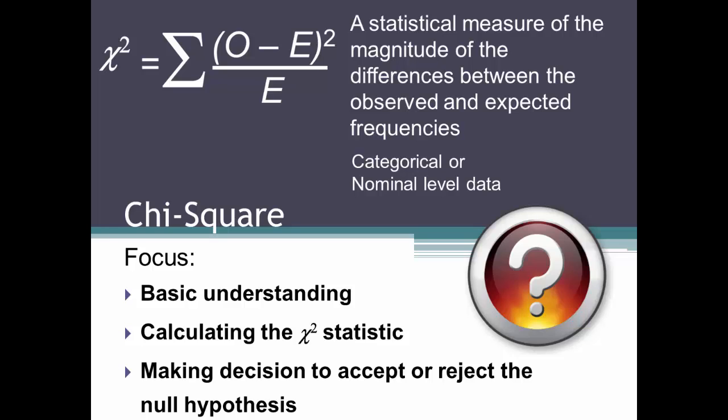We will calculate a one-variable chi-square here. Once you understand the basics, the two-variable chi-square, while time-consuming, will be fairly simple to do.